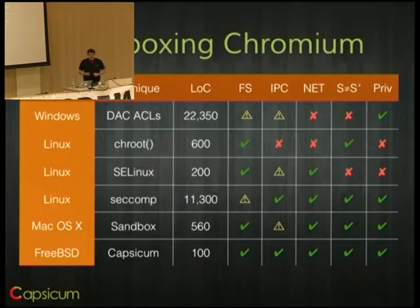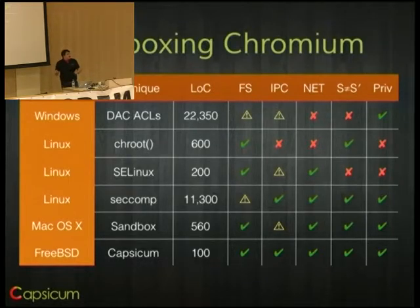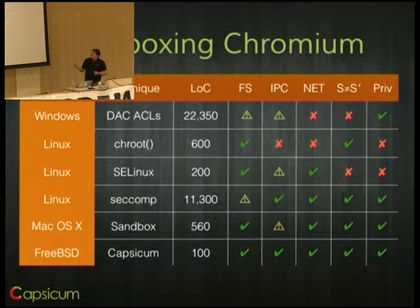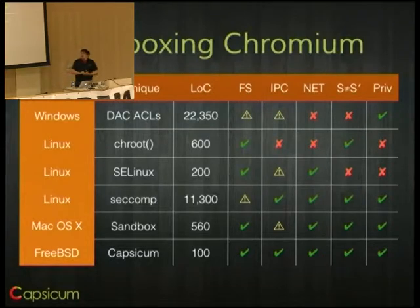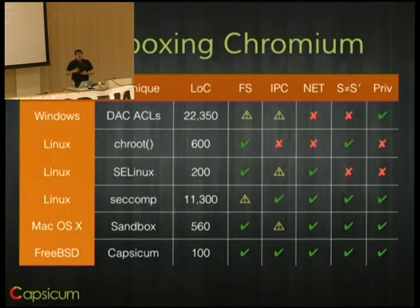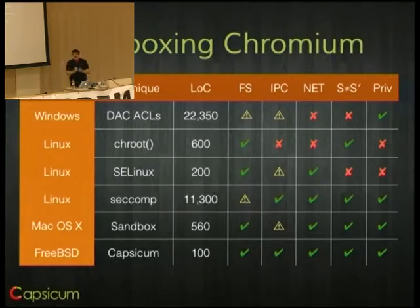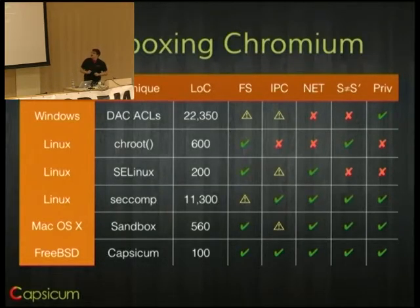SEComp is an interesting model. The original SEComp, where you just had three system calls available to you, is somewhat capability-oriented. The trouble is that in order to get any meaningful work done, the developers of Chromium had to write over 11,000 lines of code — much of it 2,000 lines of handcrafted assembly — all of which was absolutely security-critical in order to forward system calls out to the browser process. This desire to really clamp down backfired, and that has since led to SEComp 2.